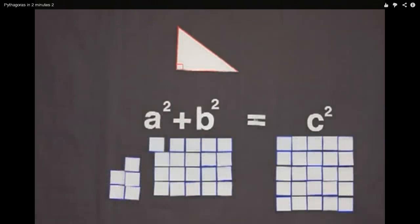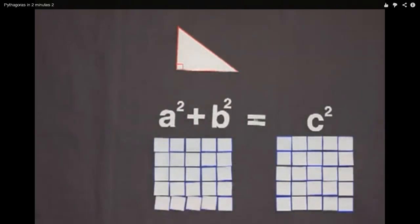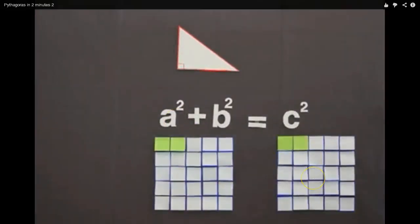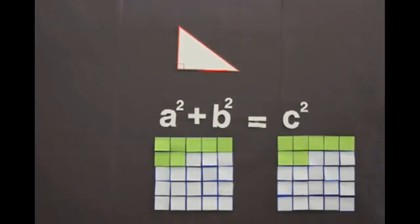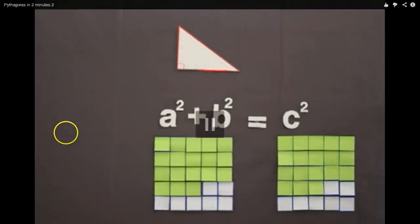And I do a bunch of goopy things to show you. Look at that — it proves. When you put them together, the squares are the same. And you color them green, the squares are the same. Any right angle triangle, this thing works. It's pretty cool and it's pretty amazing.